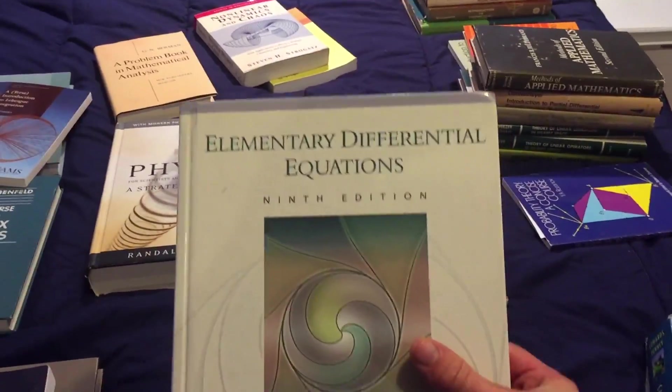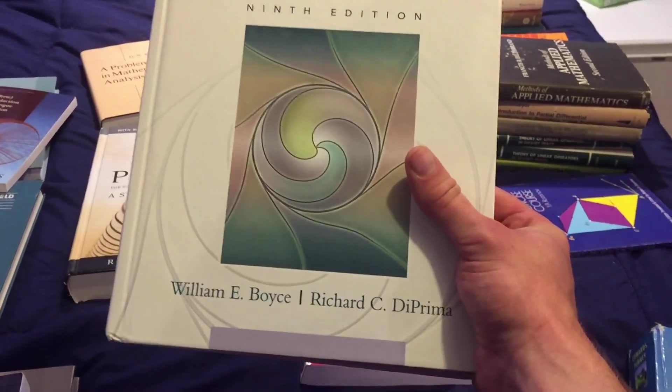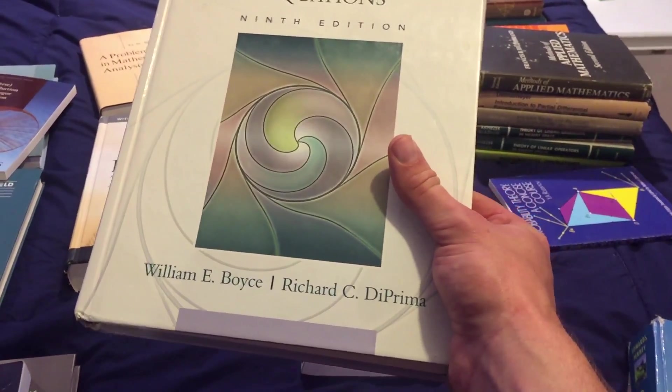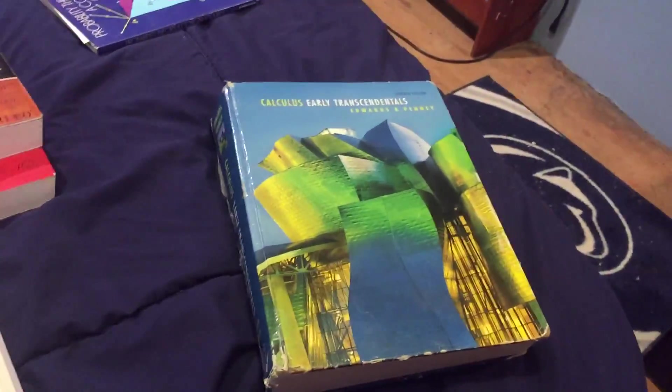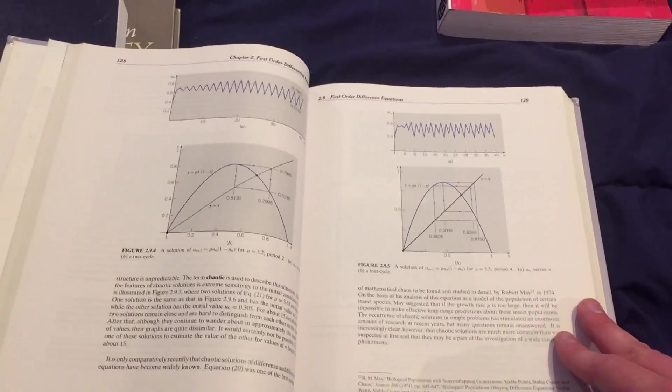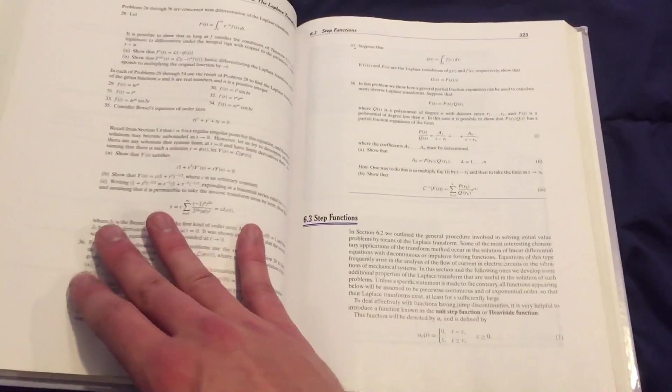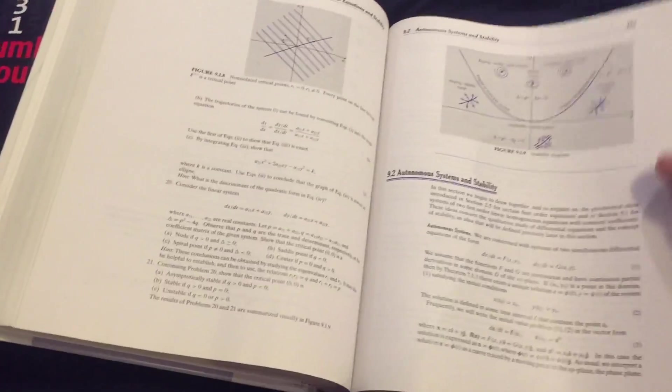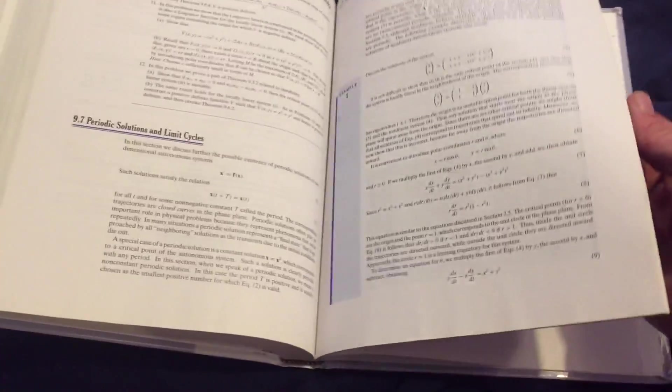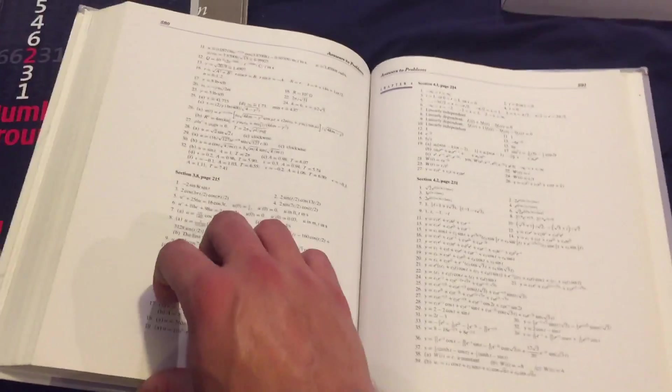This is where it all started for me. This is my calc one, two, and three book back in college. Underneath this is my Elementary Differential Equations, ninth edition, by Boyce and DiPrima. I don't know if I'm pronouncing that right. This is the book that I used right after my Calculus Early Transcendentals when I took my first differential equations class my fourth semester of college. I don't even think I picked... I think this was an older edition of the book that I was supposed to have.